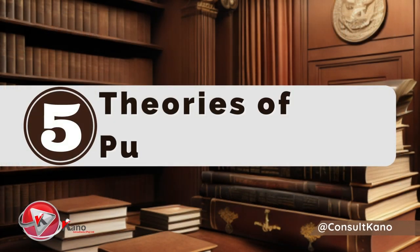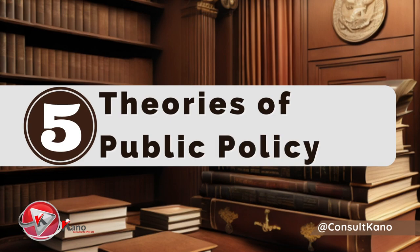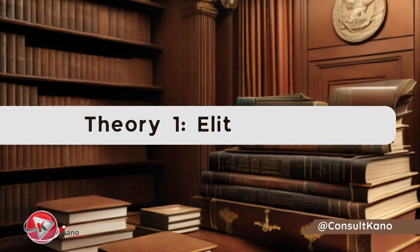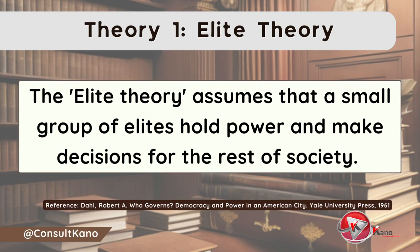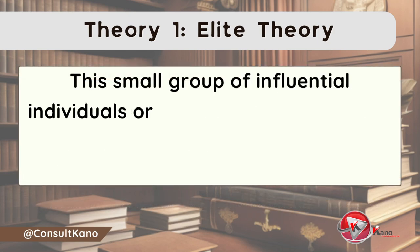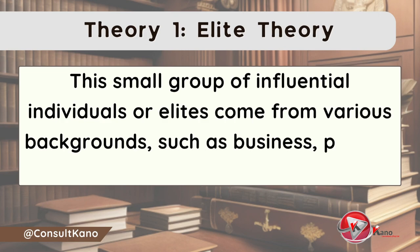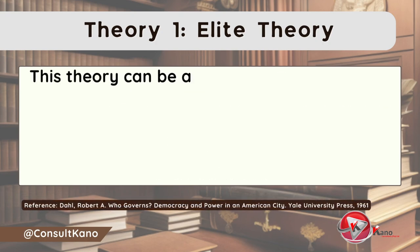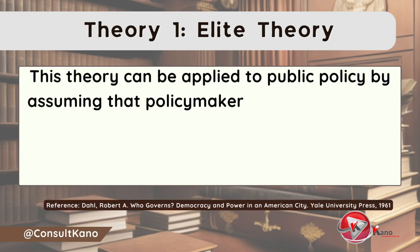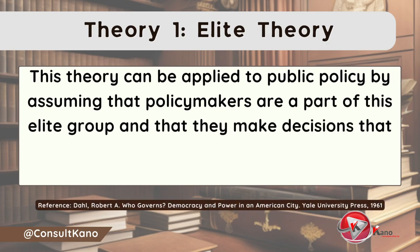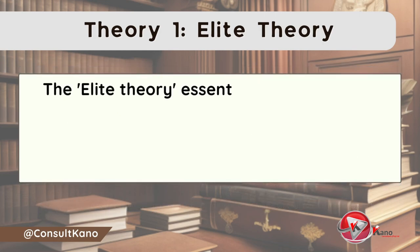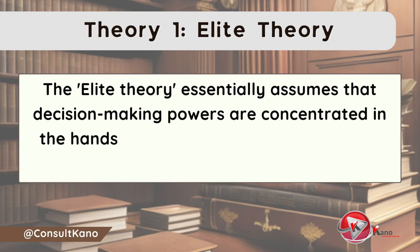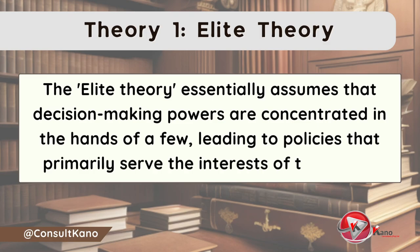There are many different public policy theories; however, in this video we will focus on some of the most common ones. Let's begin with our first theory: the elite theory. The elite theory assumes that a small group of elites hold power and make decisions for the rest of society. This small group of influential individuals, or elites, come from various backgrounds such as business, politics, or academia. This theory can be applied to public policy by assuming that policymakers are part of this elite group, and that they make decisions that benefit their own interests rather than the interests of the general public. The elite theory essentially assumes that decision-making powers are concentrated in the hands of a few, leading to policies that primarily serve the interests of those few.